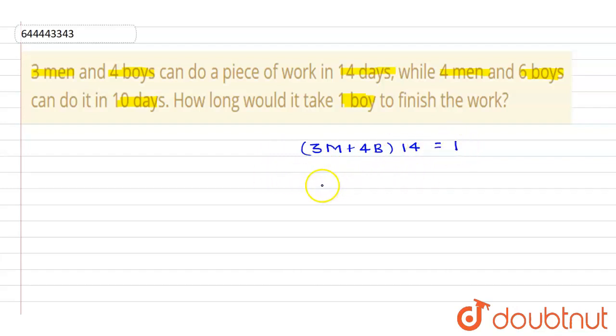According to the second condition, we can write (4m + 6b) × 10 = 1, where work is 1.